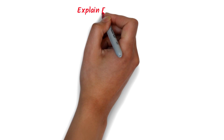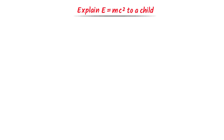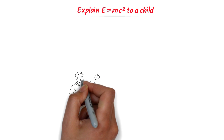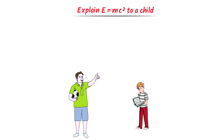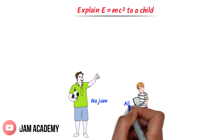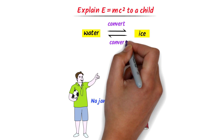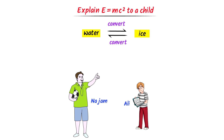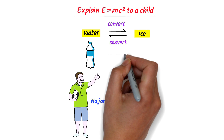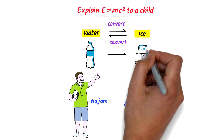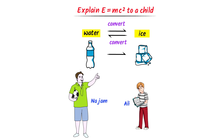Now how can we explain E equals mc squared to a child? Consider Mr. Najam and his cousin Mr. Ali. Mr. Najam is going to explain E equals mc squared to Mr. Ali in a very simple way. Mr. Ali, we know that we can convert water into ice, and ice into water, under special conditions. For example, when we keep water in the refrigerator, water is converted into ice. On the other hand, we can convert ice into water at room temperature.